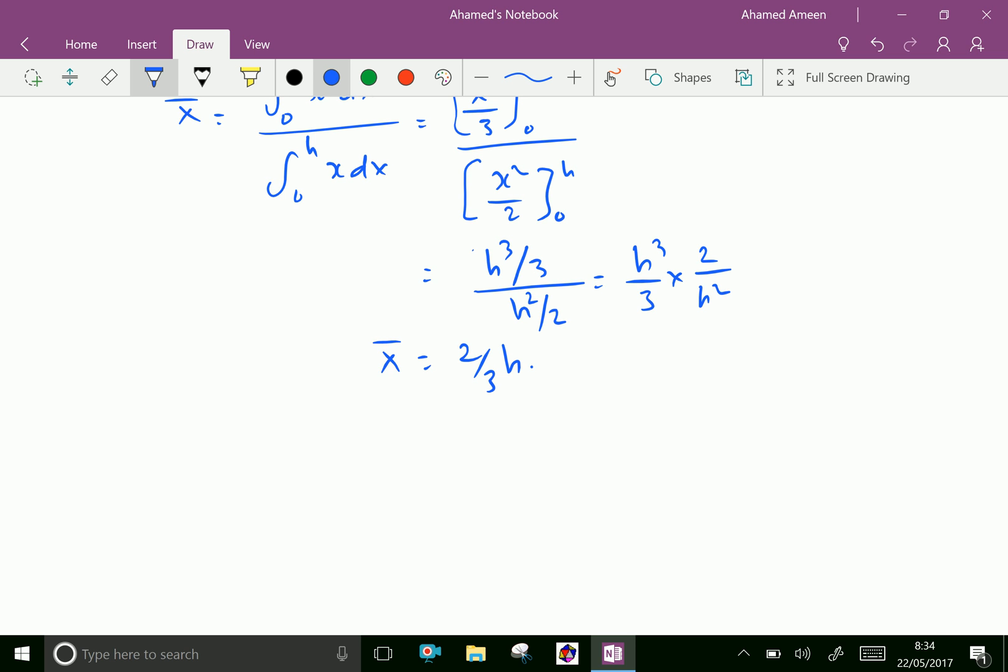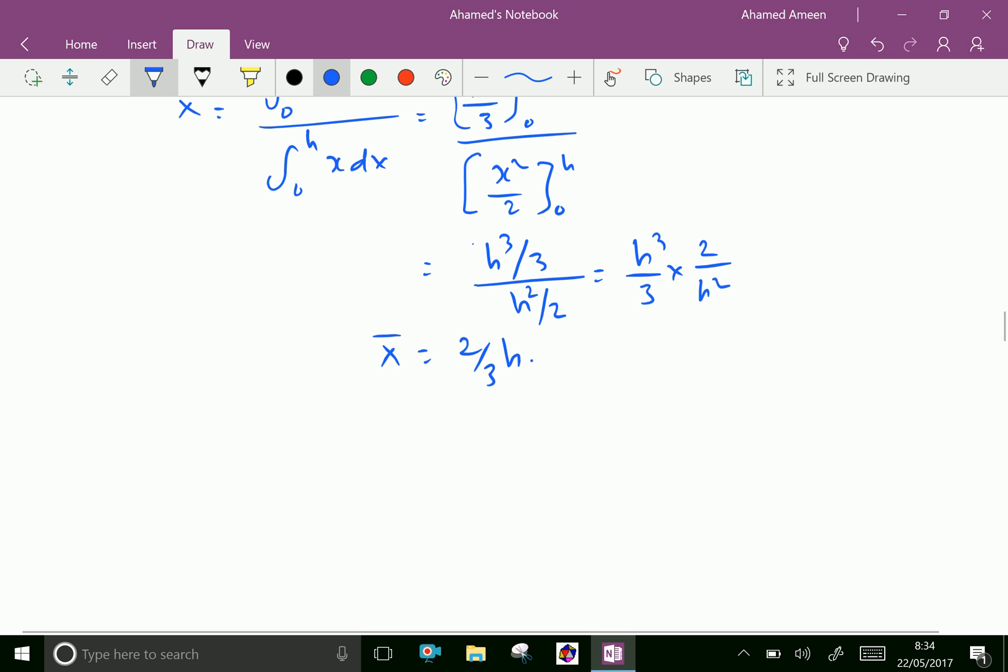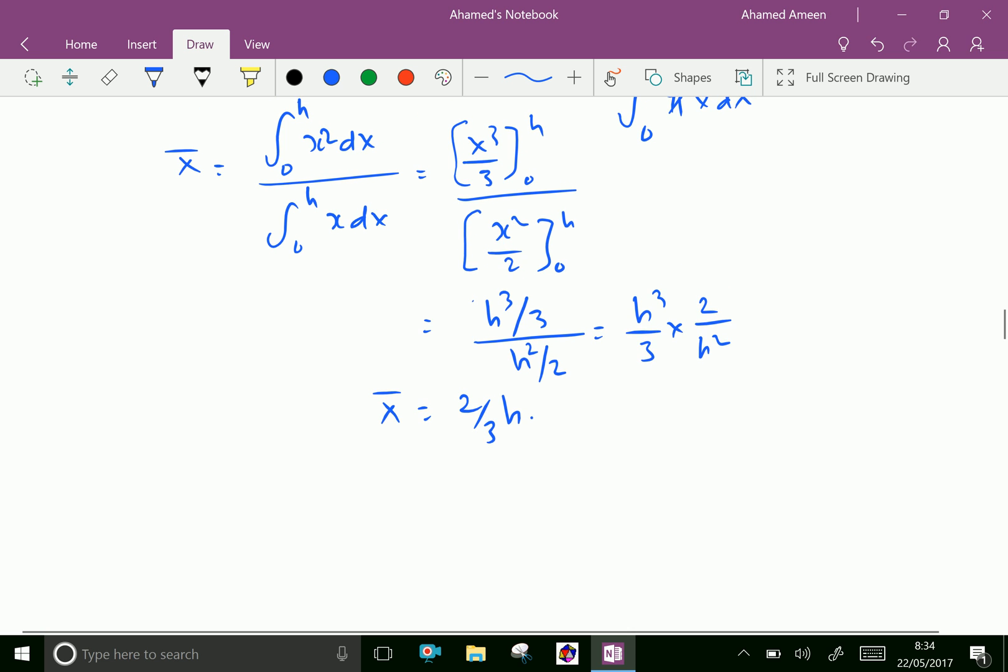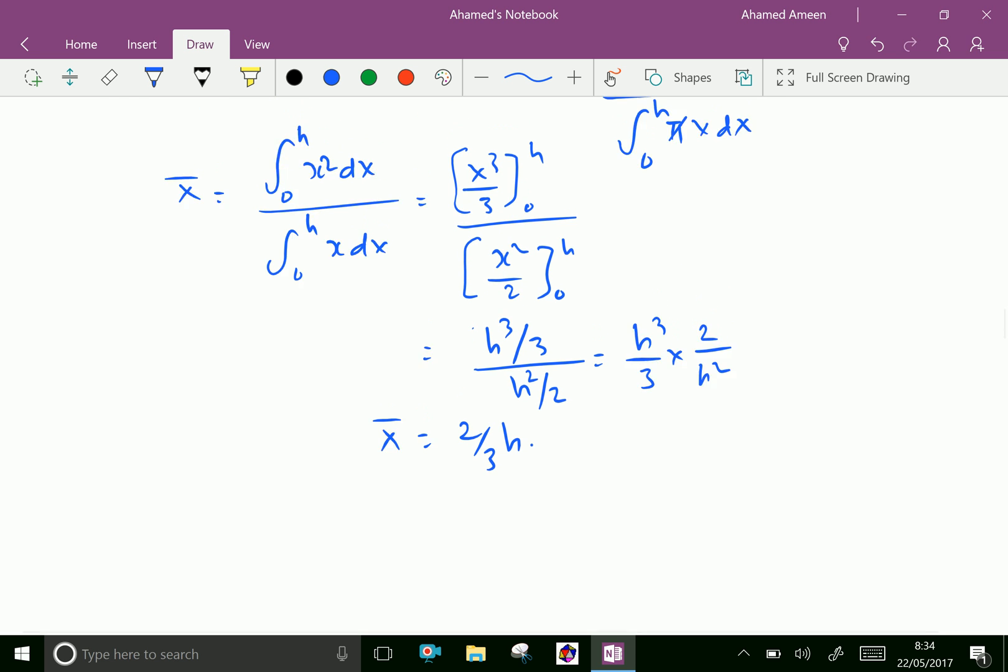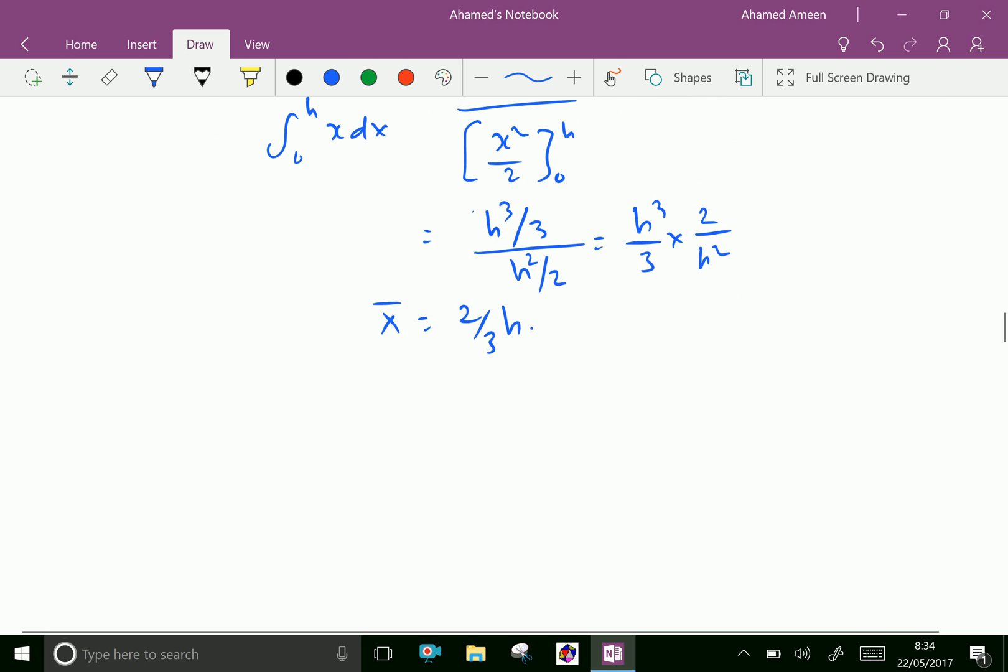The center of gravity of the paraboloid from its apex is equal to 2h/3.